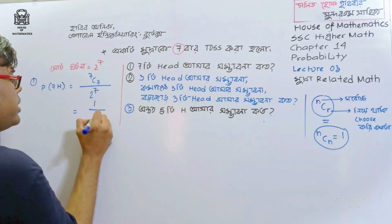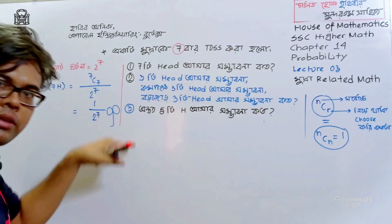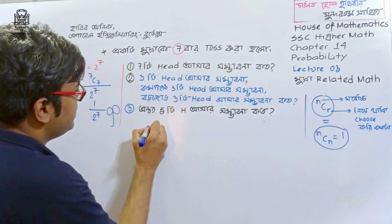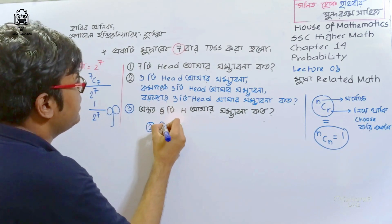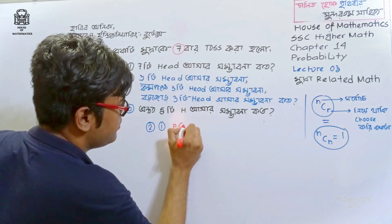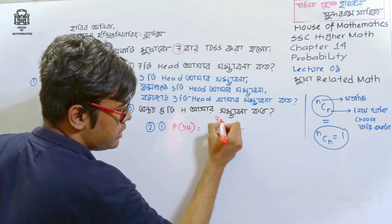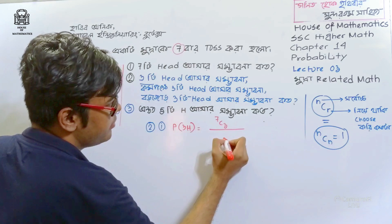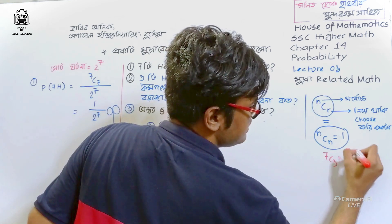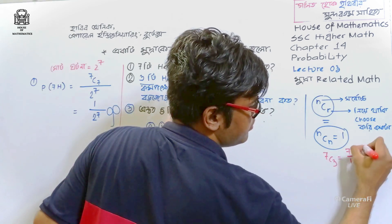Our answer is 1 by 2 to the power of 7. Now for the next part: I want to find P of 3 heads, written as P(3H), with a total of 7 tosses. That is 7C3 divided by 2 to the power 7. Since 7C3 equals 35, the answer is 35 over 128.